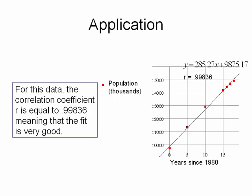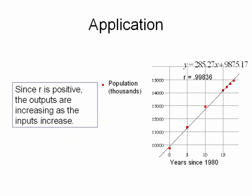For this data, the correlation coefficient is 0.99836, meaning the fit is very good because that number is very close to 1. It's also a positive number, so the line has a positive slope — this is a positive correlation, meaning that as the inputs increase, the outputs are also increasing.